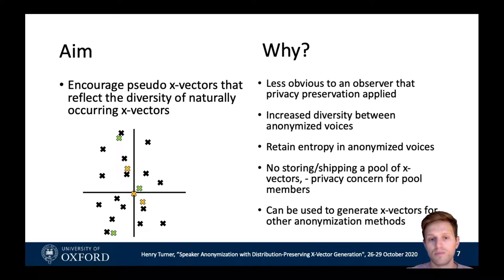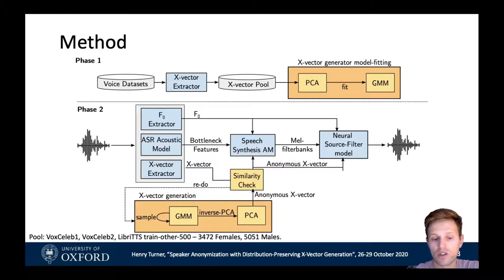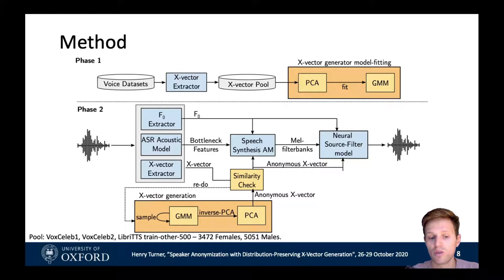So how does our method work? We create an x-vector generator by fitting both a PCA and a GMM to a large pool of x-vectors. For our x-vector pool we use the initial pool from the baseline system and augment it with more data using both the VoxCeleb1 and VoxCeleb2 datasets. This generator is used in conjunction with the rest of the baseline system, where we extract initial features, generate a fake x-vector, and then use this for speech synthesis. We also include an optional similarity check: if we generate an x-vector too similar to the original, we repeat the generation to prevent transforming the voice to one very similar to the original.